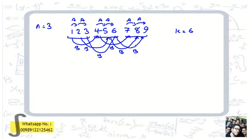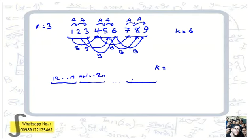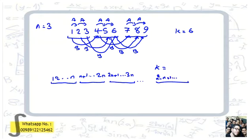Now we can guess the answer for general n. We consider n segments: 1 to n, then n+1 to 2n, then 2n+1 to 3n, and the last part is n²−n+1 to n². These things go in A, and other connections go in B.